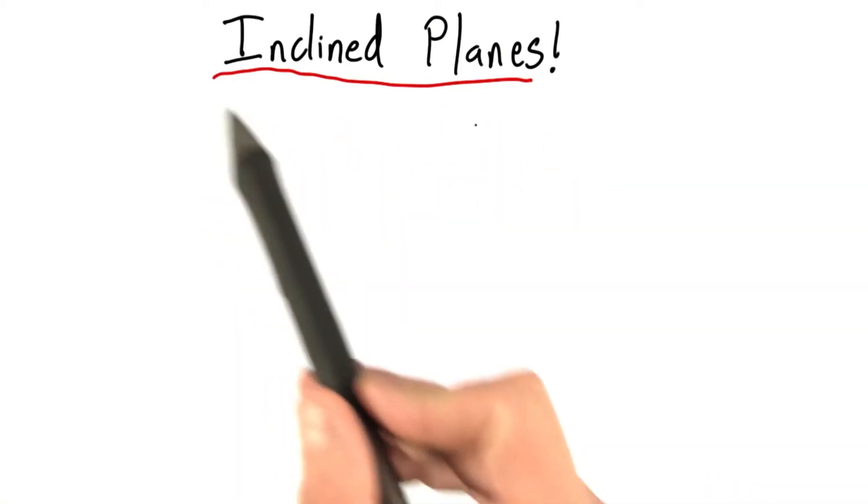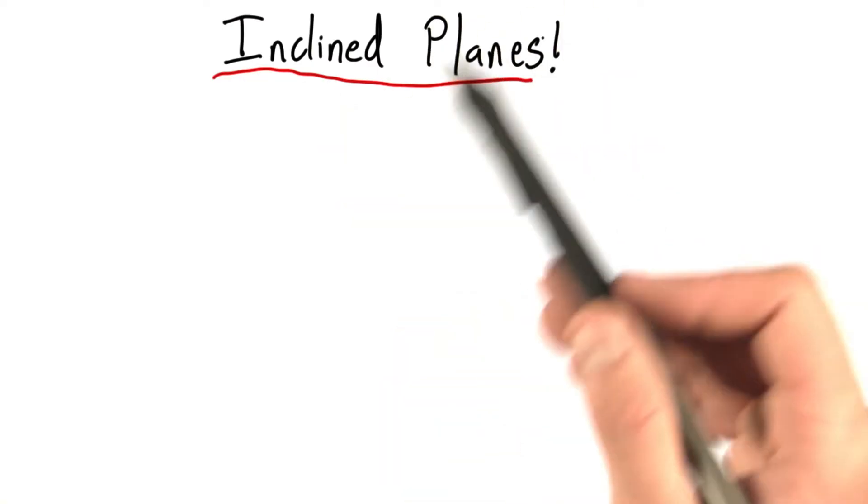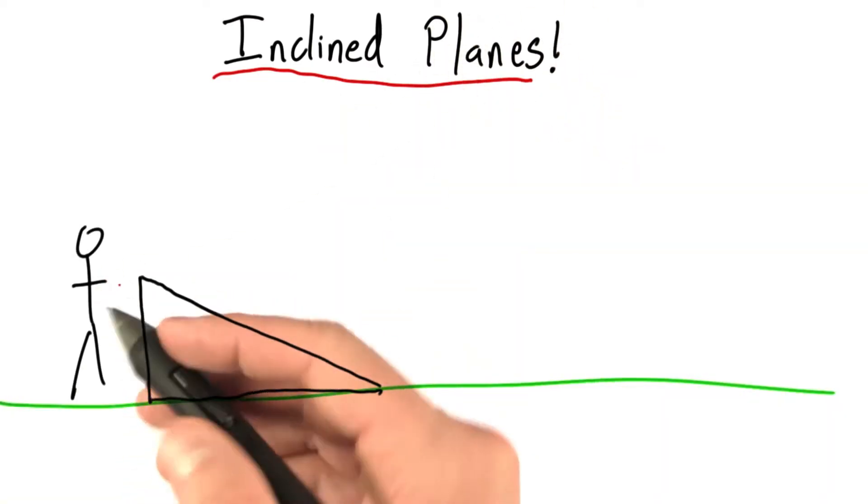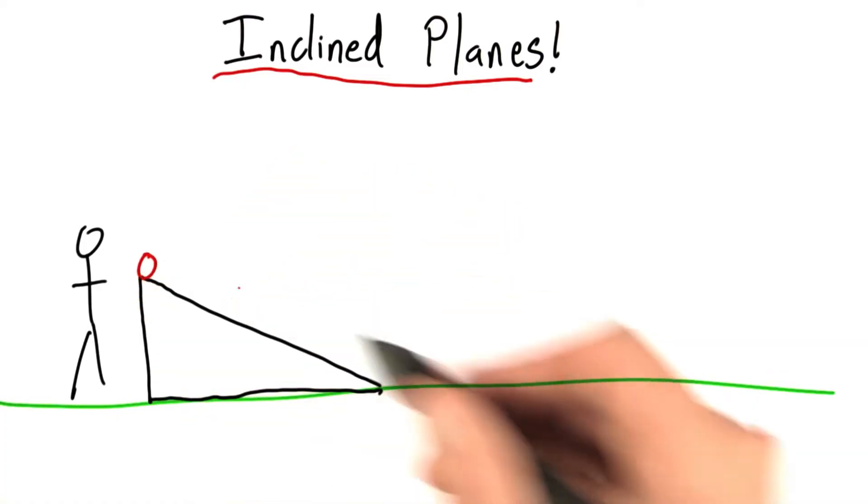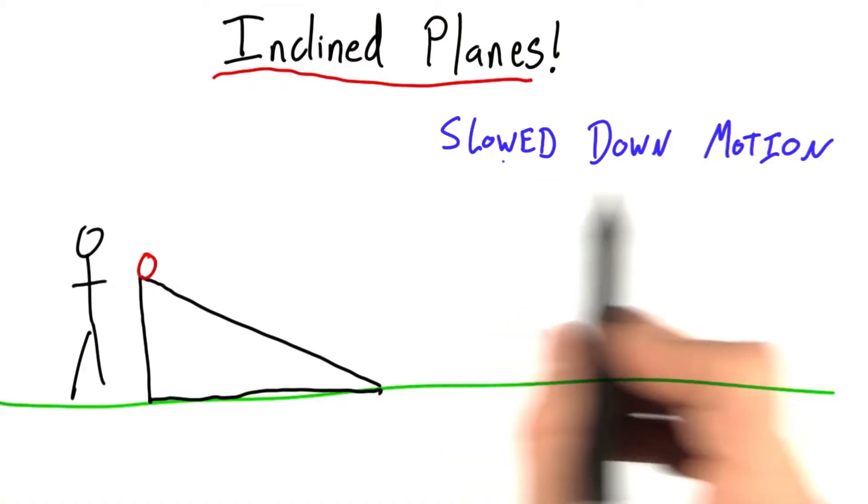So before we do more problems, let's do a quick lesson on inclined planes, because they're really a fascinating tool for making nature work for us. We already know that Galileo had a lot of fun rolling balls down inclined planes. And if you remember, the reason he did this was because it slowed down motion,